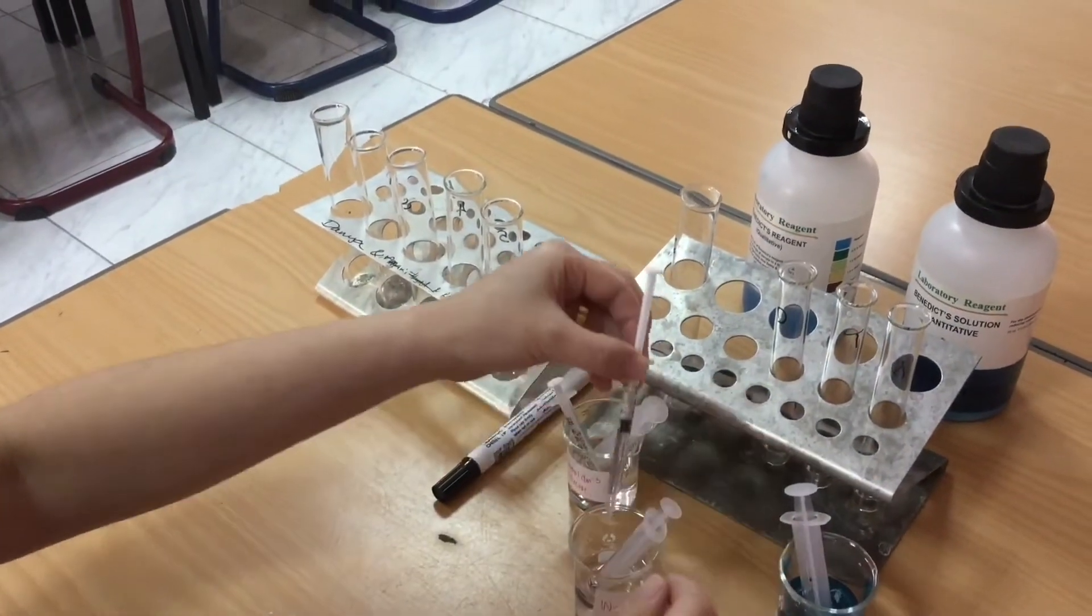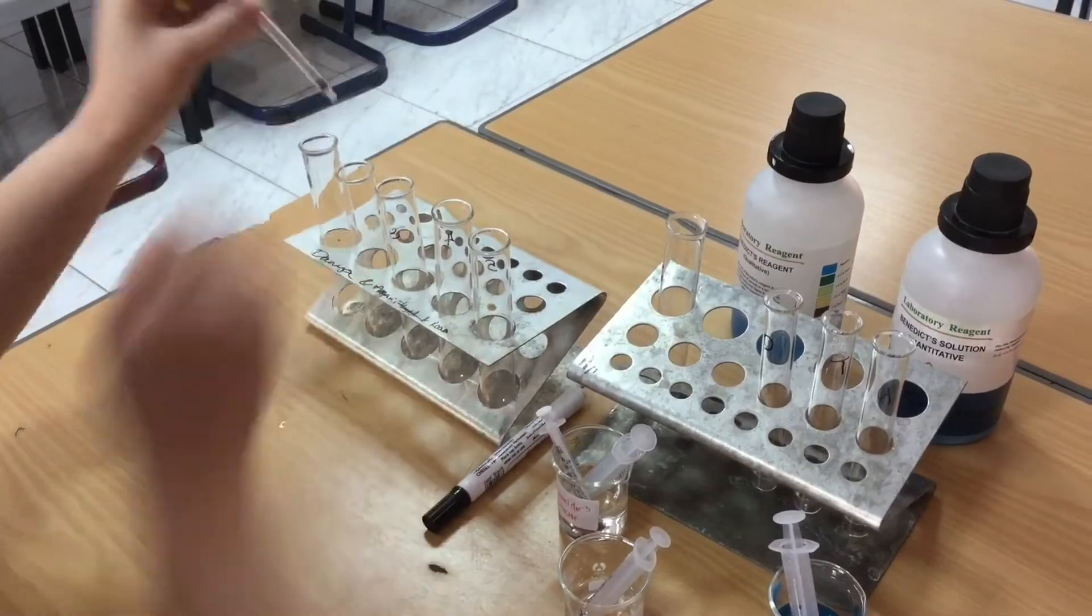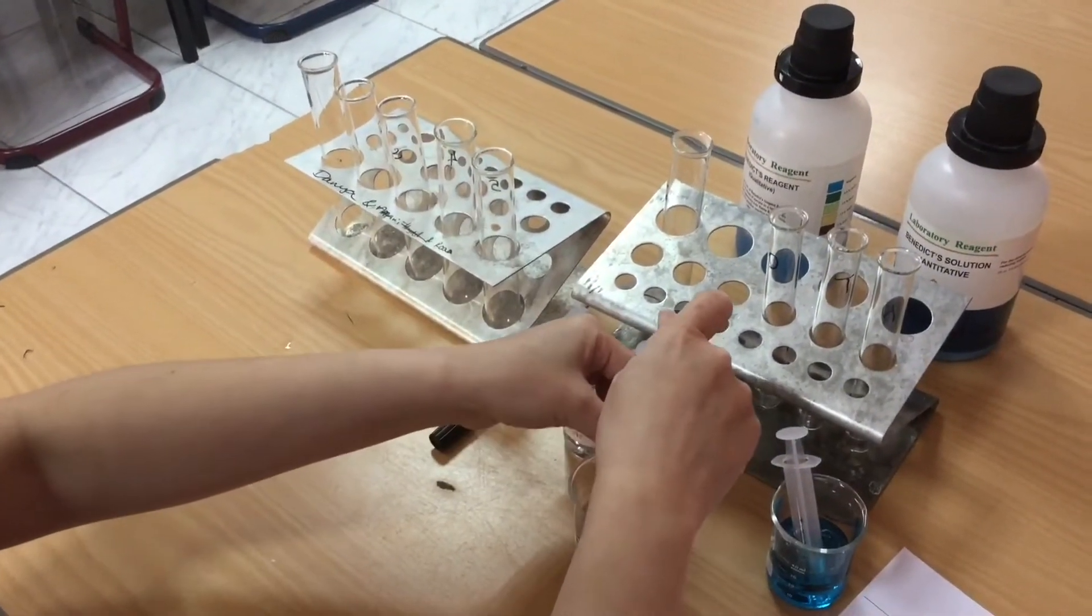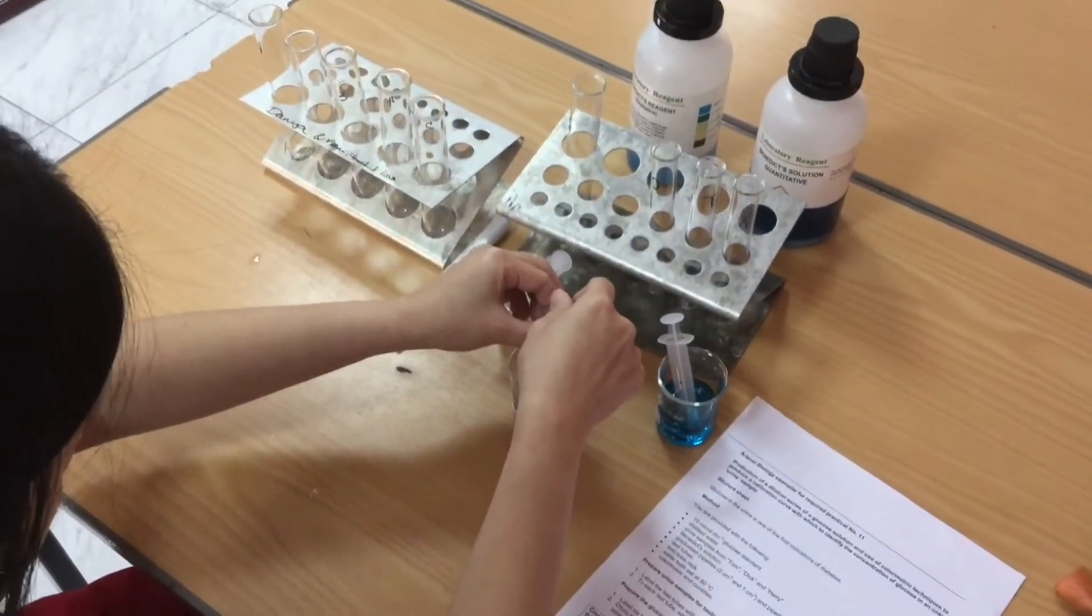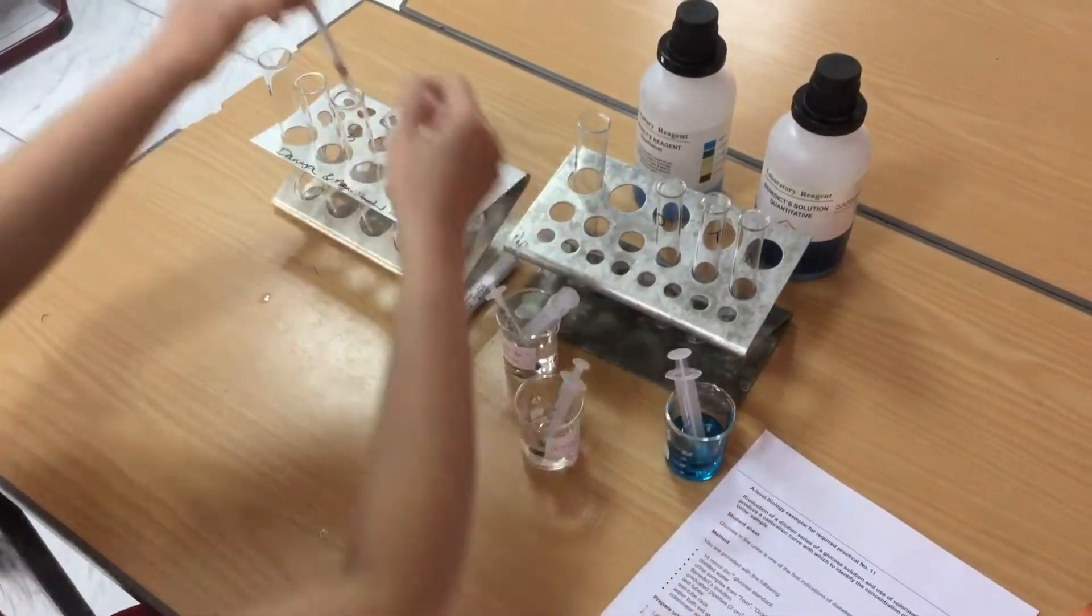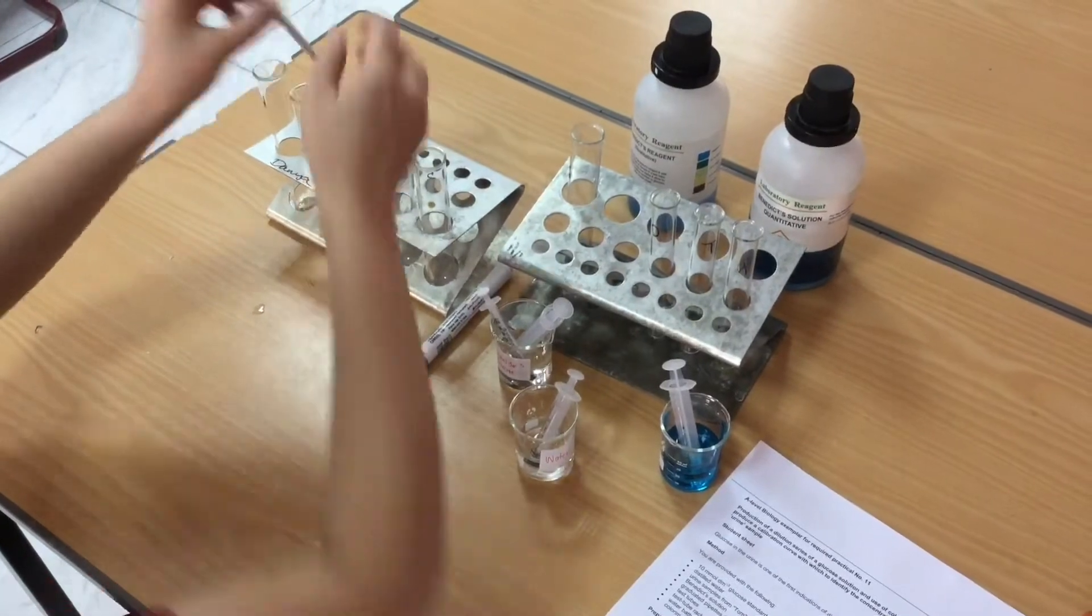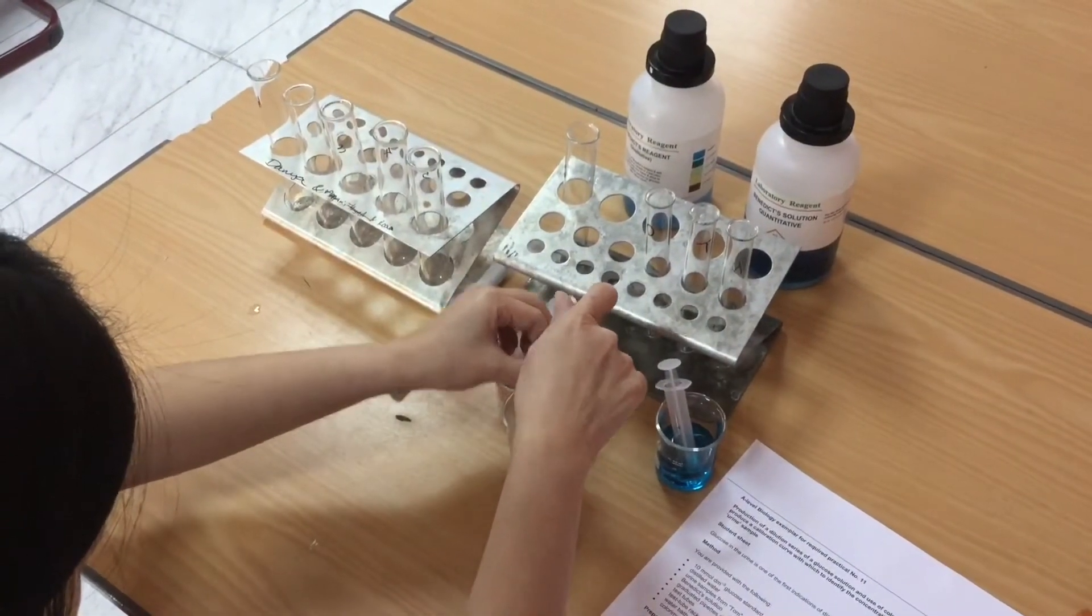In tube one I'll have two mils of water and no glucose. In tube two I'll have 1.6 mils of water and 0.4 of glucose. In tube three I'll have 1.2 mils of water and 0.8 of glucose and so on.